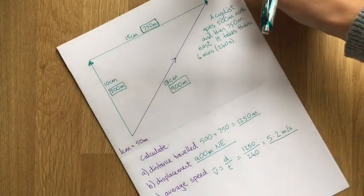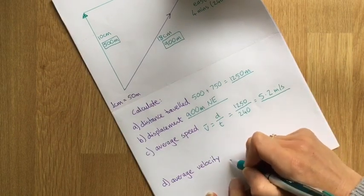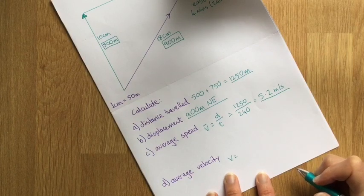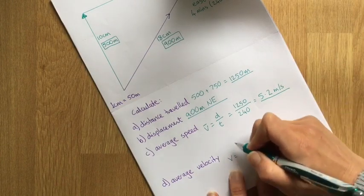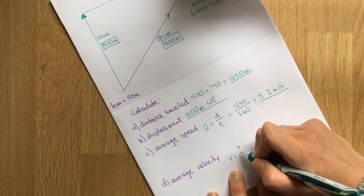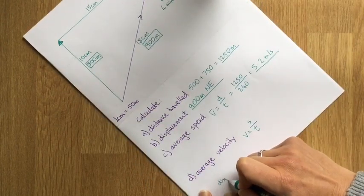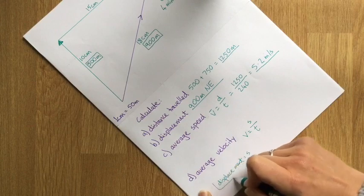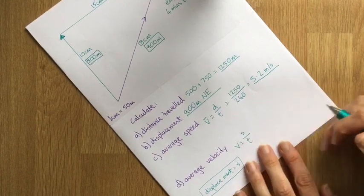Hopefully that makes sense. But then what we're asked to do is we're also asked to work out their average velocity. So the average velocity, we're actually writing the same way. The average velocity, we use displacement rather than distance. Now displacement has actually got the symbol S, but you do sometimes see it as D as well actually. And that's divided by T. So displacement is S. So velocity, average velocity is the displacement divided by the time.